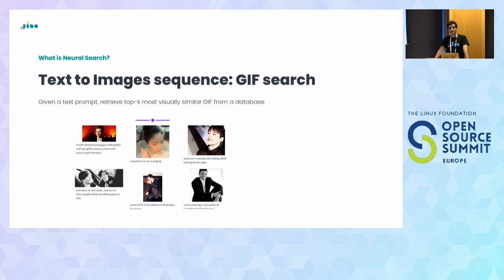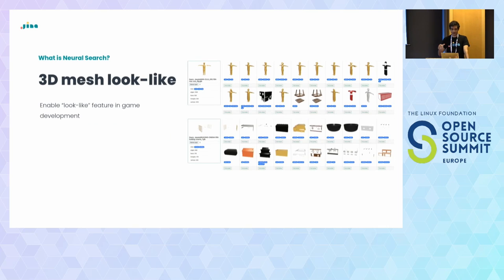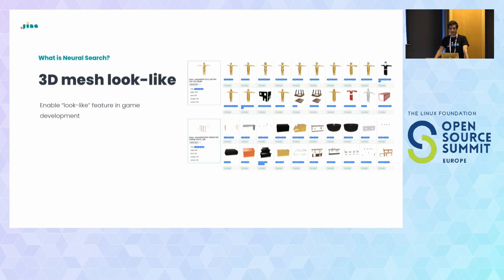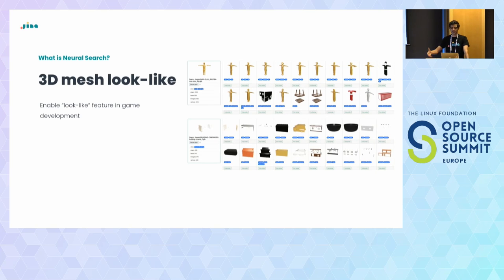Another example of neural search would be text-to-image search — GIF search or video search. You can imagine a solution where people are looking for GIFs and just give a description, for example, 'a man wearing a suit,' and it will bring back a matching image. Another example is 3D mesh search. There is a company using our open source tools to create an extension for a video game engine, where a game developer can look for 3D meshes and find similar 3D objects in a store to increase productivity.